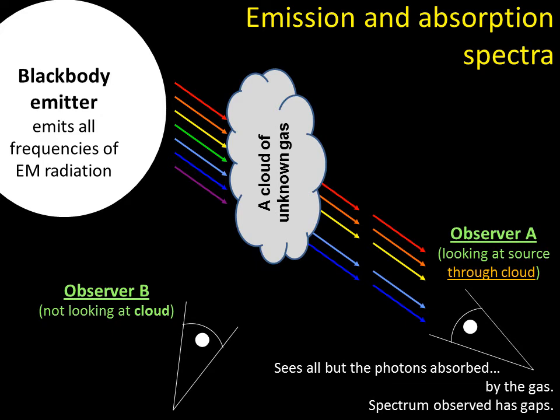So what they do is they re-emit green and purple, but they throw them out in all different directions, and some of them will hit Observer B directly. Which means Observer B, actually, now that cloud to them has got green and purple light.